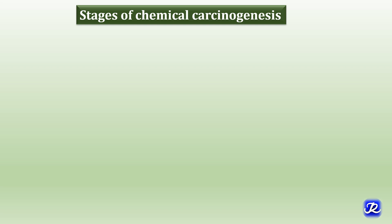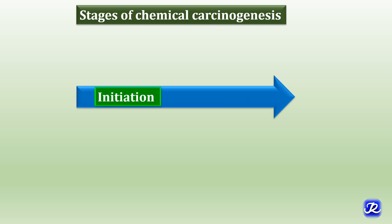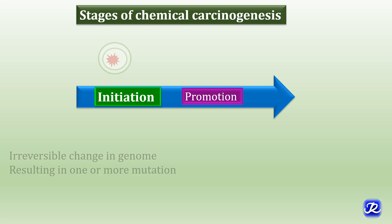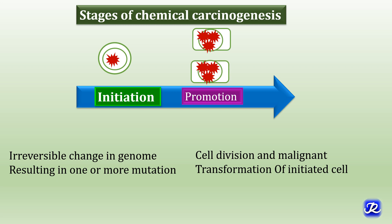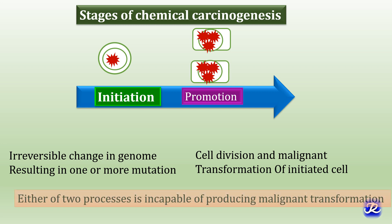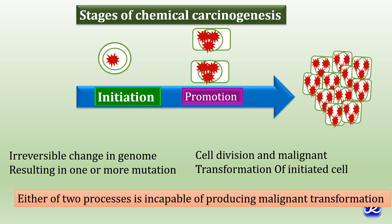There are two stages of chemical carcinogenesis: initiation and promotion. Initiation is the stage which produces irreversible change in the genome of a cell resulting in one or more mutations. Such a cell is predisposed to become cancerous but is not yet a cancerous cell. Promotion is the stage in which cell division and malignant transformation of the initiated cell is induced. Most promoting agents act by altering signal transduction and gene expression. Either process alone is incapable of producing malignant transformation; both initiation and promotion are required.